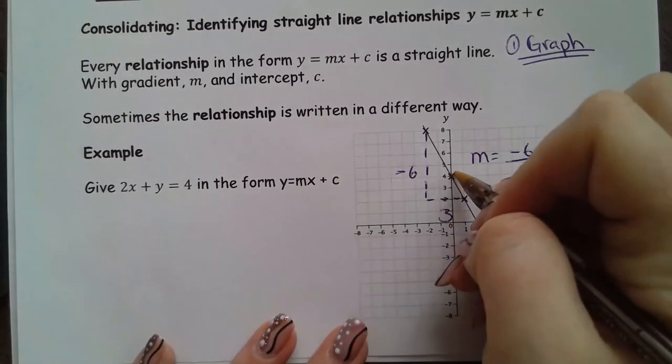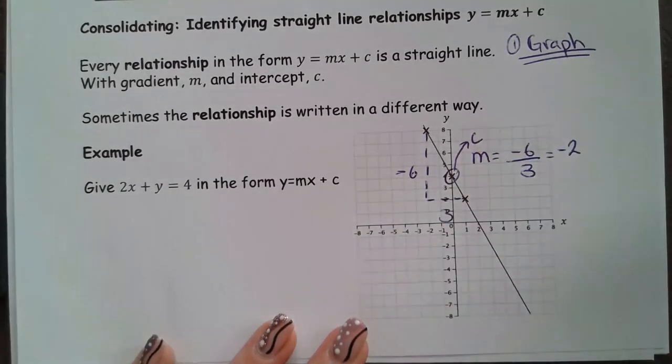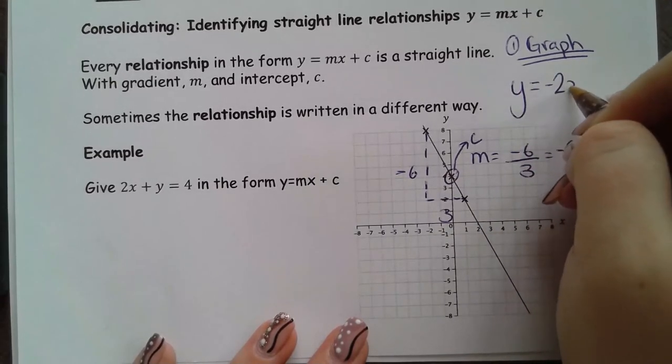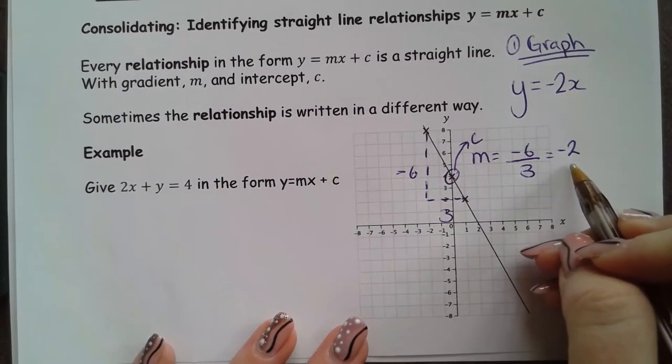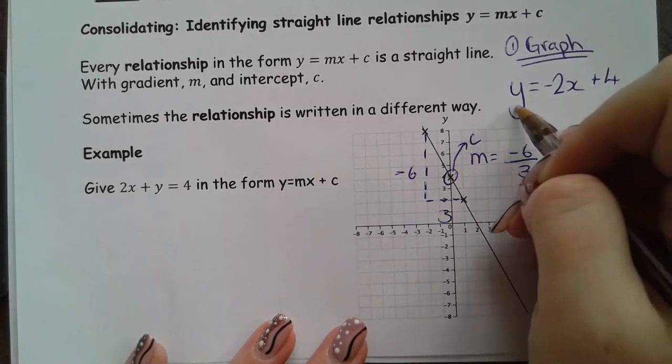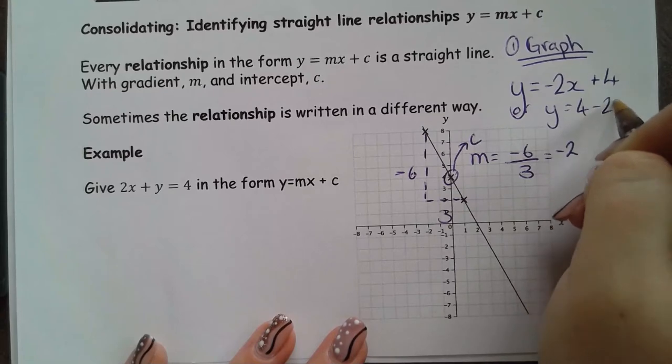And I know my c because this bit is my y-intercept. So, my graph is of the form y equals minus 2x from this m and plus 4. Or, y equals 4 minus 2x.